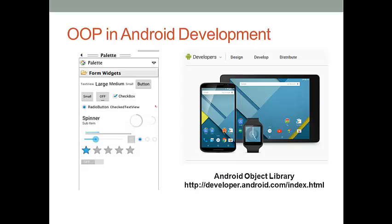In the palette panel of Eclipse, we could have other controls — for instance, regular button, checkbox, spinner, and so on. They are all graphical representations of control classes. We have so many classes. How do we know how to use them to create instances? The Android development team has created an online library for global developers. This library shows us what kind of classes are available and how we can use these classes to create control instances. The user interface of the library looks similar to the one shown on the right of this slide, and the web address is also listed.